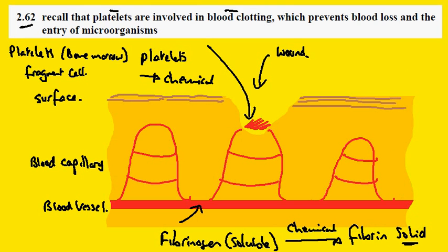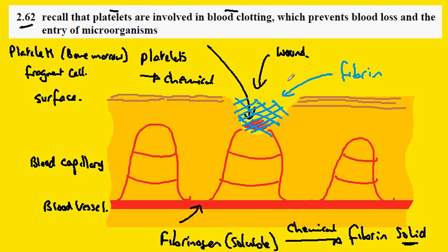The consequence of this is that we get a matrix, a network of fibrin molecules here, and onto this solidifies red blood cells.